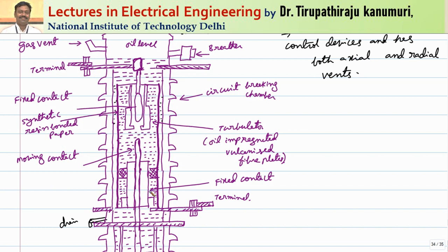There is also a fixed contact on the lower side connected to the supply terminals. Under normal operating conditions, the moving contact is in touch with both the upper and lower fixed contacts, conducting current. Whenever the contacts are separated to extinguish the arc, an arc is established between the contacts. The arc decomposes the oil, producing mainly hydrogen — nearly 1,000 times the volume of the decomposed oil — along with some other gases and carbon. This produces huge pressure inside the chamber.